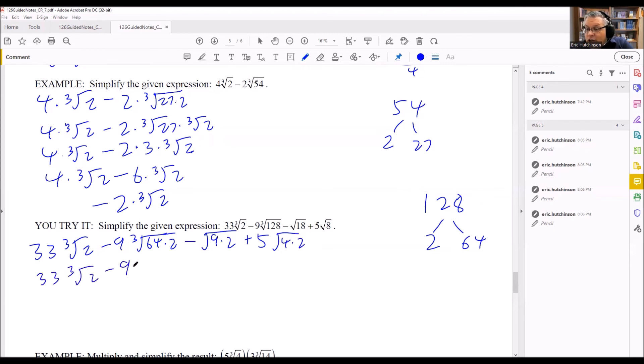So I have 33 cube root of 2. I have minus 9, and then I'm going to break each of these down. I'm going to do cube root of 64 times the cube root of 2. And then this one, I'm going to break down into square root of 9 times square root of 2 plus 5 times square root of 4 times square root of 2.